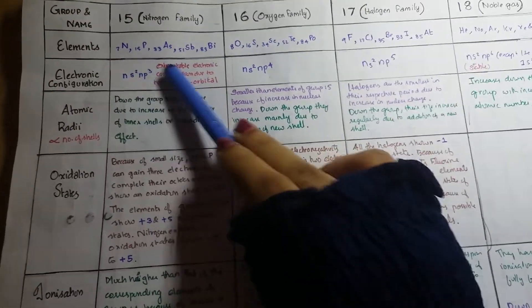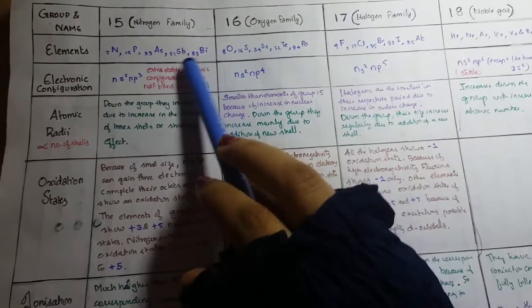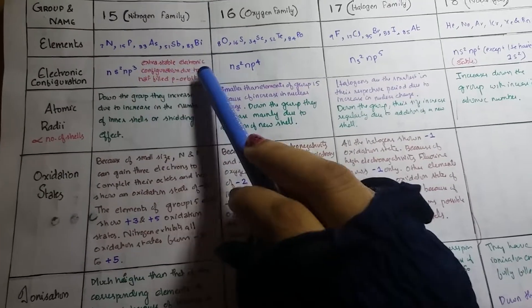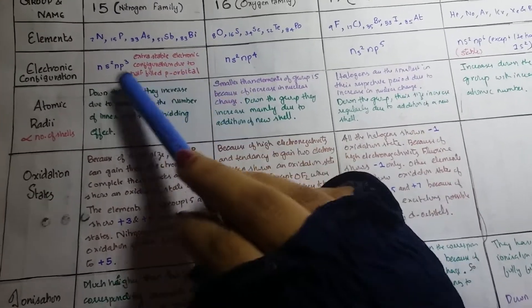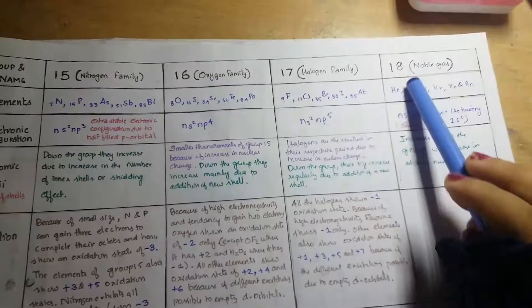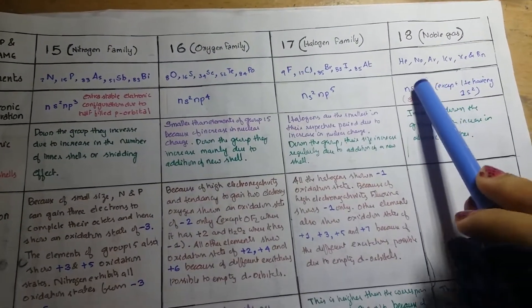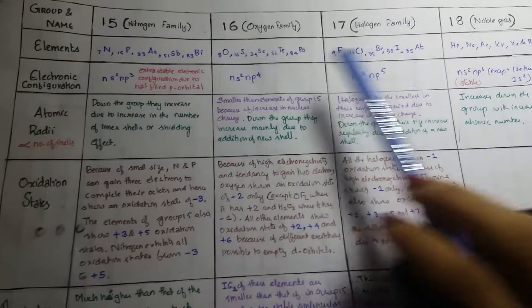That also we all know. In group 15 it is extra stable electronic configuration due to half-filled p orbital, and for group 18 it is also stable as it has a fulfilled p orbital.